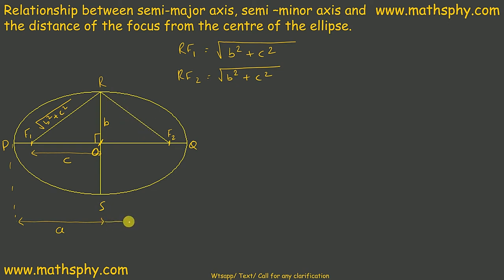Now, this is also A. This is C. In that case, from this focus to Q will be A minus C. From F2 to Q will be A minus C.